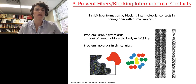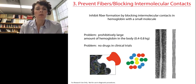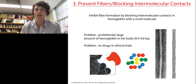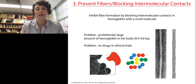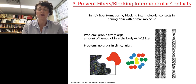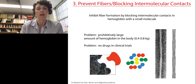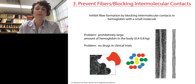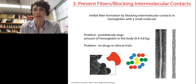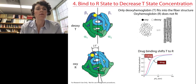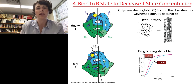The third mechanism is to inhibit hemoglobin fiber formation by blocking intramolecular contacts with a small molecule — you could imagine developing a small molecule that attaches to the surface of hemoglobin and blocks these contacts, preventing aggregation. However, there's a prohibitively large amount of hemoglobin in the body, and currently there are no drugs in clinical trials thought to work in this way. The fourth mechanism is to find a molecule that binds to the R state of hemoglobin to decrease the T state concentration.